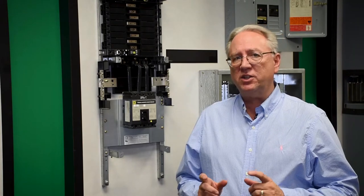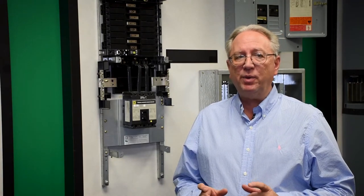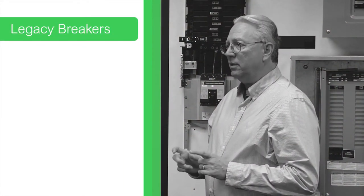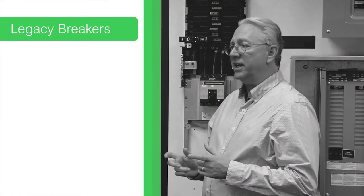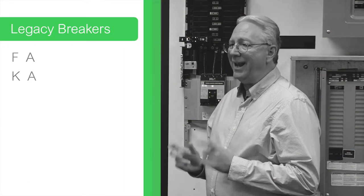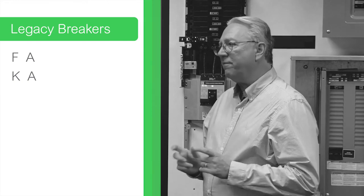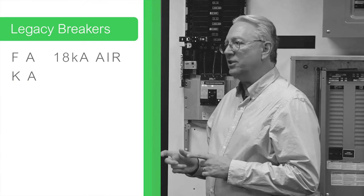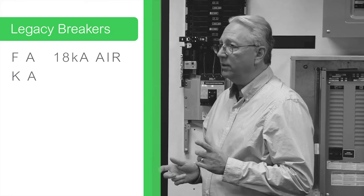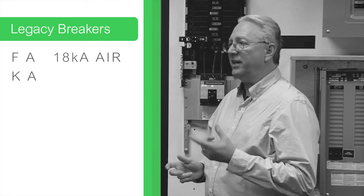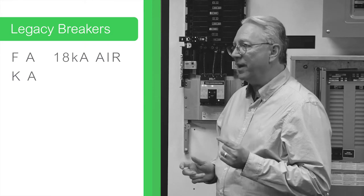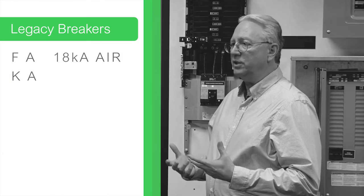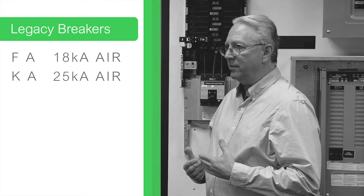The second character is tied to the ampere interrupting rating. On the legacy breakers, if that second character was an A on an F-frame breaker, that meant the breaker could withstand 18,000 amps of fault current. However, if the second character was an A on a K-frame legacy breaker, the fault current it could withstand was 25,000 amps.